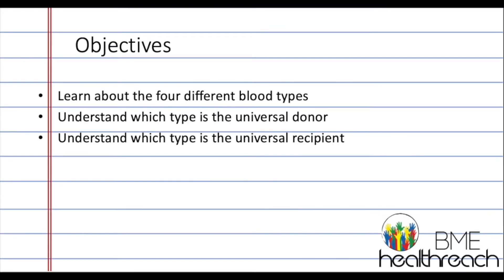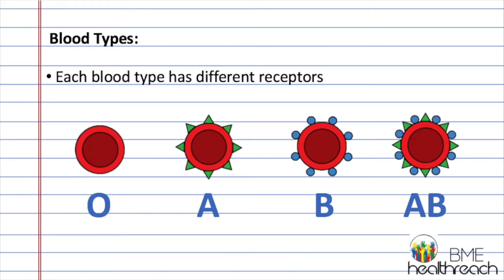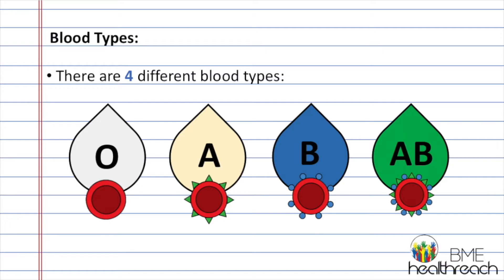Our objectives today are to learn the four types of blood and understand which one is the universal donor and which one is the universal recipient. There are four different blood types — O, A, B, and AB. Each letter stands for a different protein or capability that the blood has, and each blood type has a different receptor on the outside.